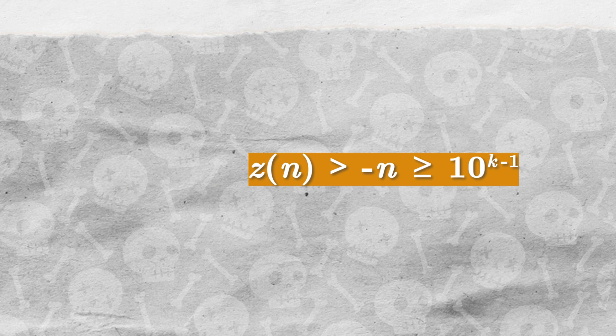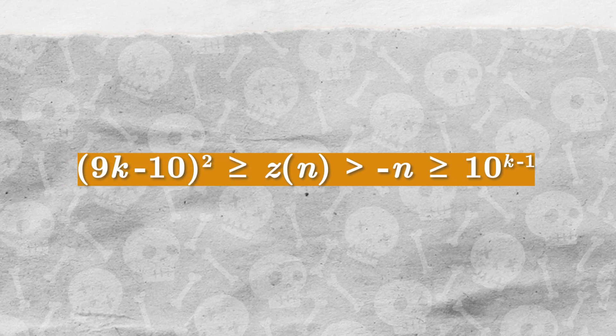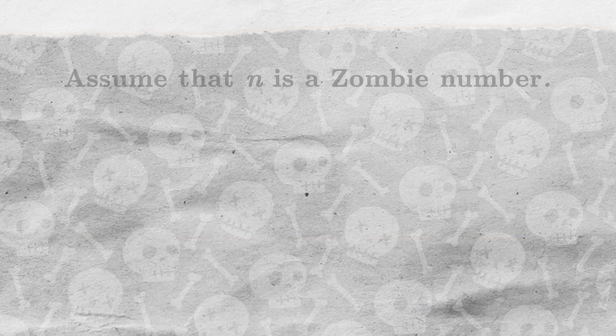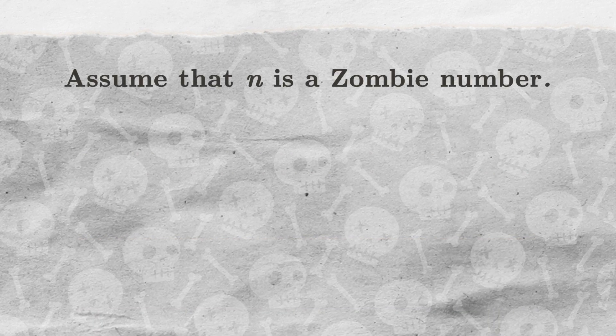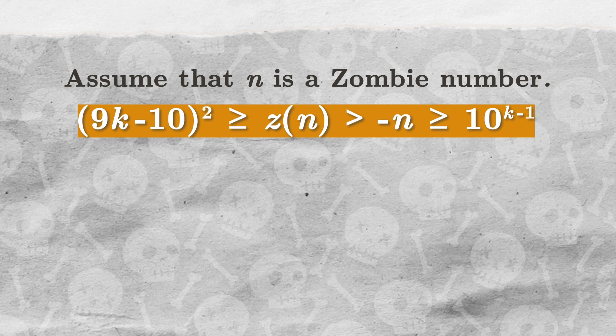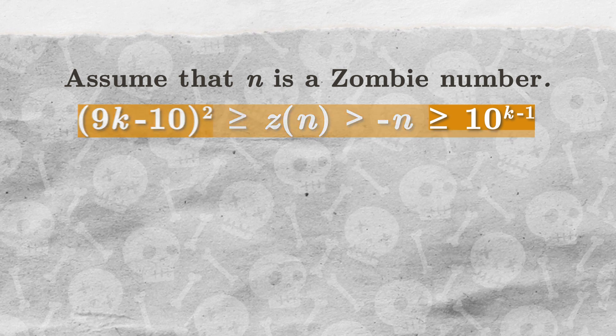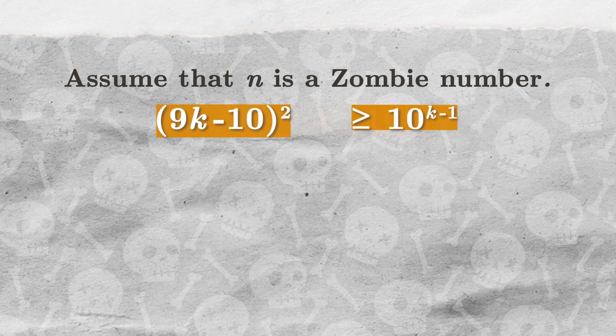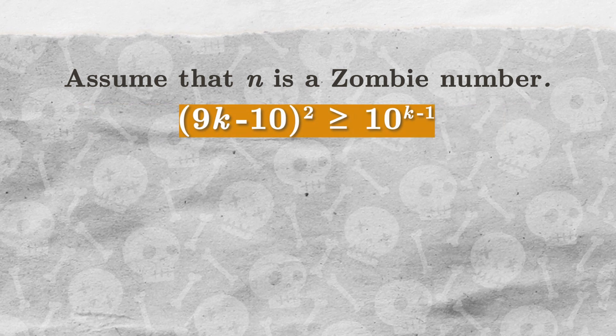We are almost there. We have all of the ingredients, so it's just a matter of putting them together. Assume that n is a zombie number. Therefore, the following trail of inequalities holds. By looking at the extreme ends of this trail, we can see that 9k minus 10 squared must be greater than 10 to the power of k minus 1.